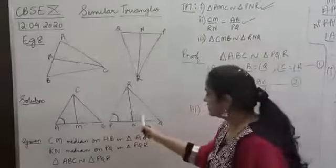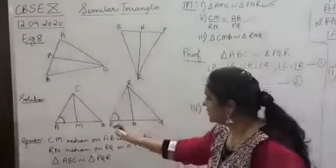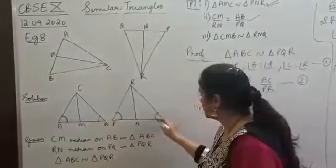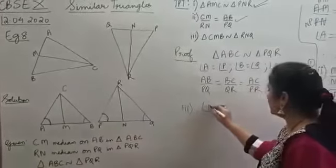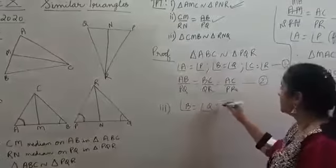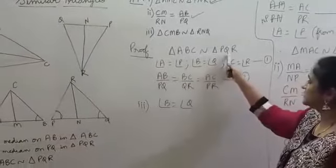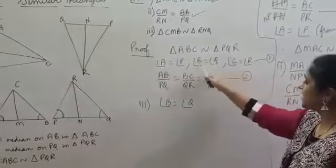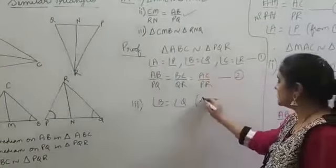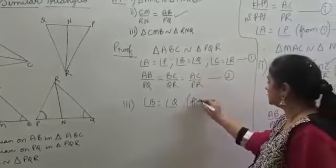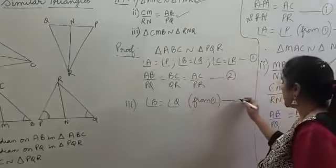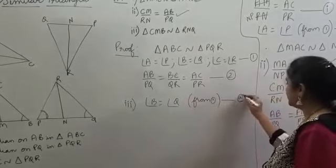To show that these two triangles are similar, we already established that angle B is equal to angle Q. Since those two triangles are similar, we already have angle B equal to angle Q. We get this result from result 1. Let's call this result A.